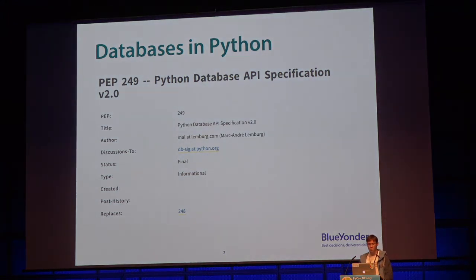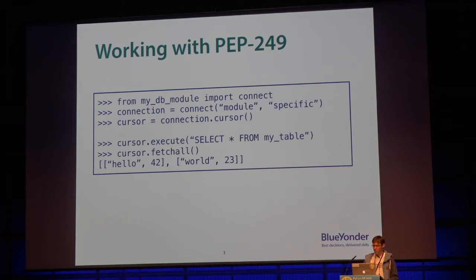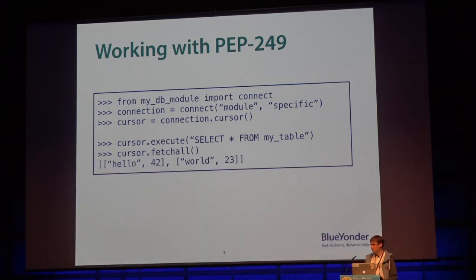There's PEP 249 — it's a Python enhancement proposal, it's pretty old, and it's widely adopted by most database modules you may find for Python. With this, database code looks the same basically everywhere. You have your database module, you import a connect function, you call it to get a connection, then from the connection you get a cursor object, which is what you do your actual work on. You call execute with some query, and use the fetch_all method to get an iterable of rows — for example, a list of lists where inner lists are individual rows.